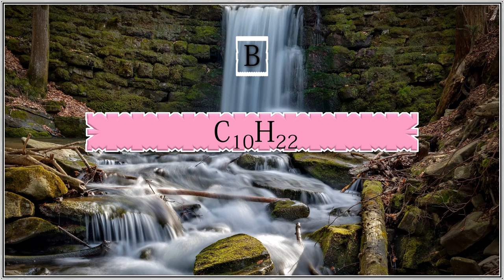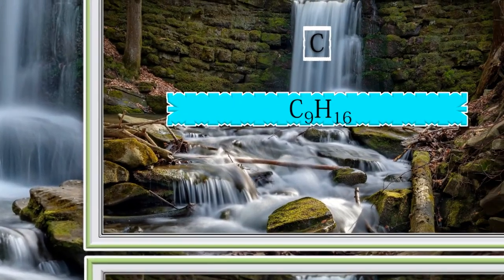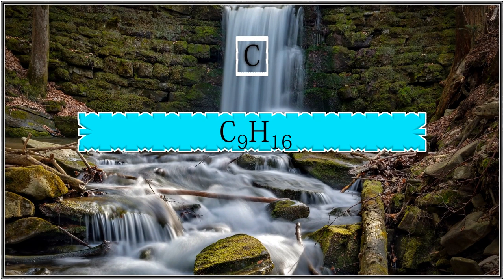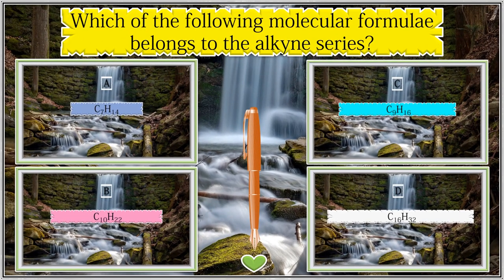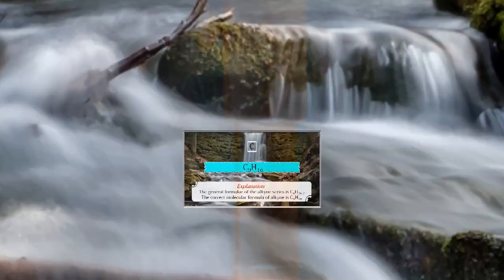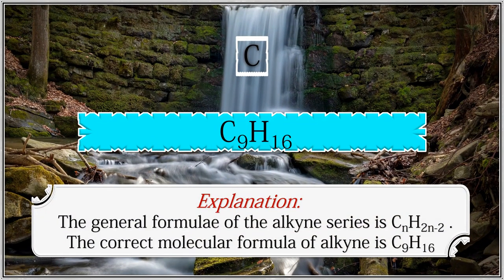Options: C10H22, C9H16, C16H32. The answer is C9H16. The general formula of alkynes is CnH2n−2, so the molecular formula of the C9 alkyne is C9H16.